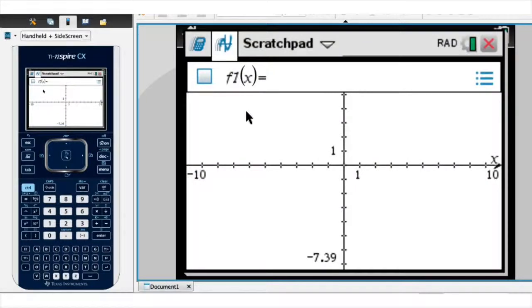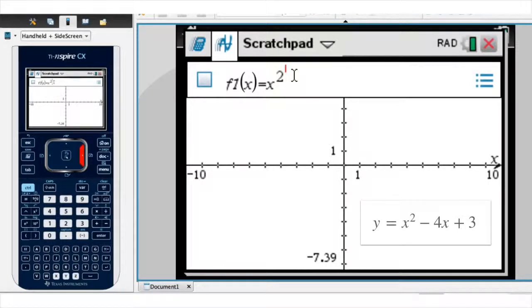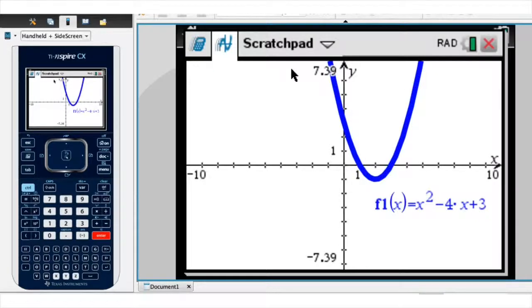Now at the top of the page, I go ahead and enter this function's equation. Remember, ours was y equals x squared minus 4x plus 3. So I type x squared minus 4x plus 3 and I click enter. We now have the graph.